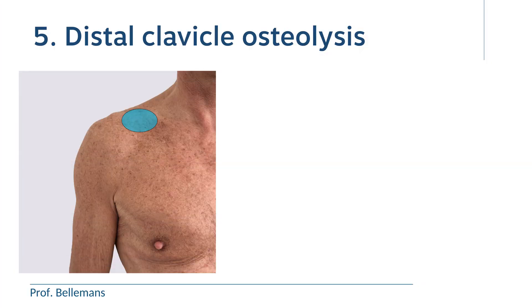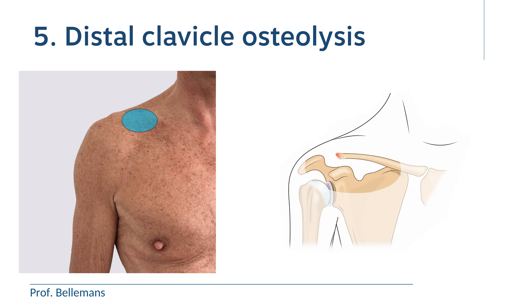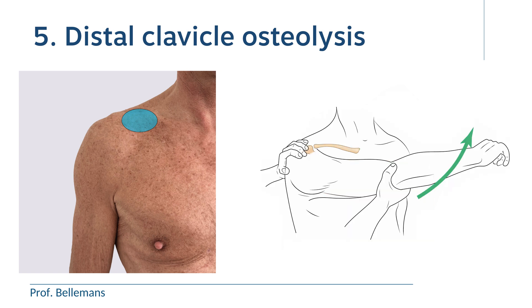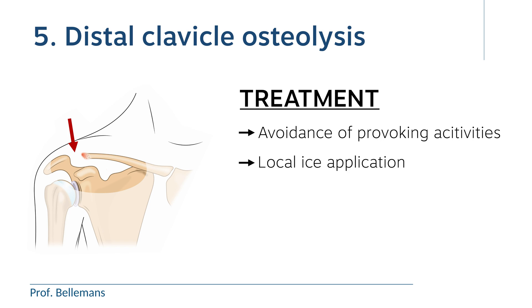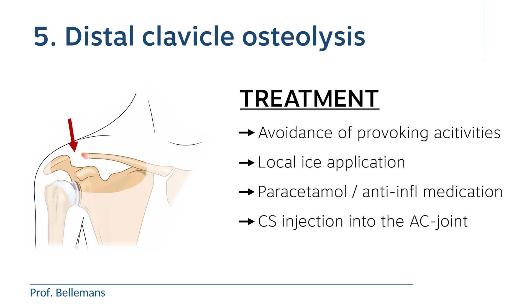Number five: distal clavicle osteolysis, also called vanishing clavicle. The pain is somewhat more medial, over the outer edge of the clavicle. This condition is usually the consequence of heavy, repeated shoulder work, which causes resorption of the lateral edge of the collarbone. The crossover test is also positive here and provokes the pain. Treatment is the same as for AC joint arthritis: temporary avoidance of pain-provoking activities, local ice application, paracetamol or anti-inflammatory medication, sometimes a corticosteroid injection into the AC joint, and in some rare cases, surgery.